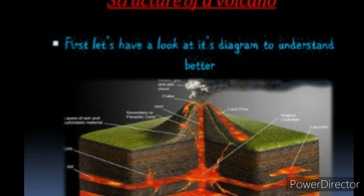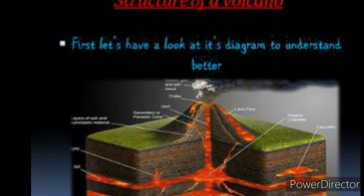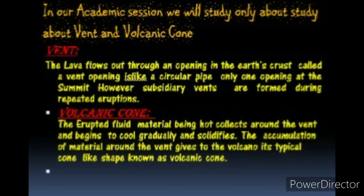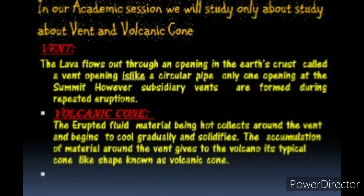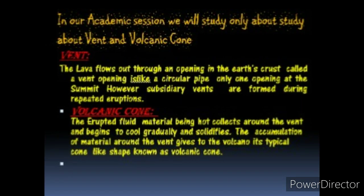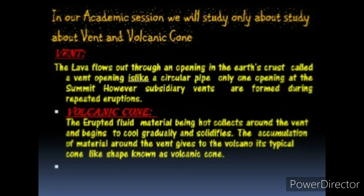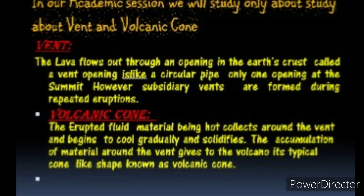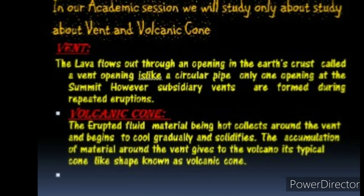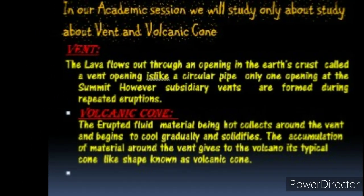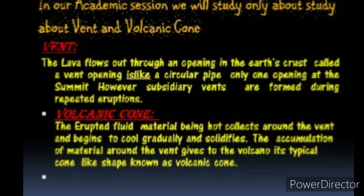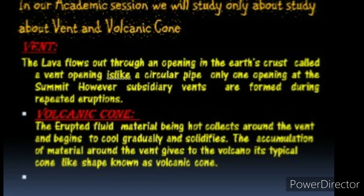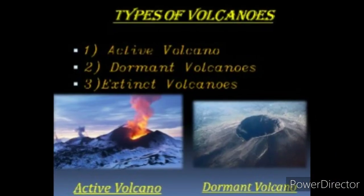The structure of a volcano is not very complex — it's quite simple. It is like an opening which allows the magma inside the magma chamber to come out. At the base, at the bottom, there is a magma chamber, and the magma comes out through a vent, which is a pipe-like structure.